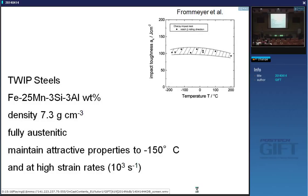The ductile-brittle transition temperature occurs when the cleavage strength becomes smaller than the flow stress — the flow stress must be very temperature-sensitive, becoming very high at low temperatures so that cleavage becomes easier. In austenite the flow stress is quite small and not temperature-sensitive, so you do not get a ductile-brittle transition and you maintain toughness even at very low temperatures. Having a high strain rate is equivalent to reducing temperature as far as plastic flow is concerned, so the properties are very good in terms of formability and achieving high strength after forming.